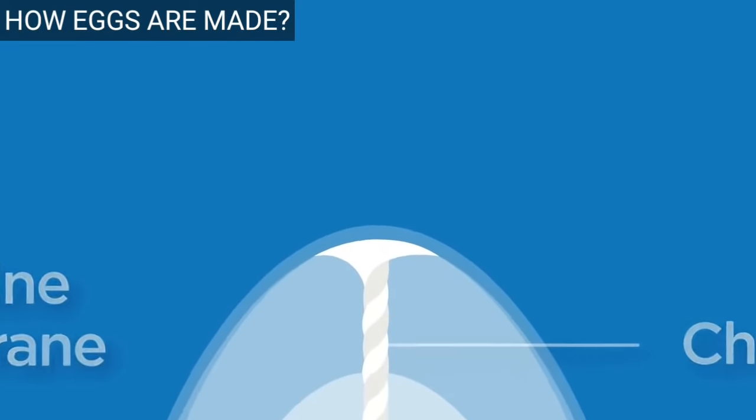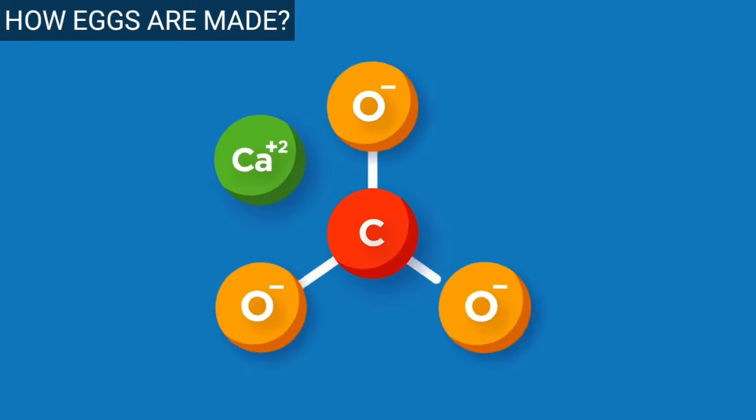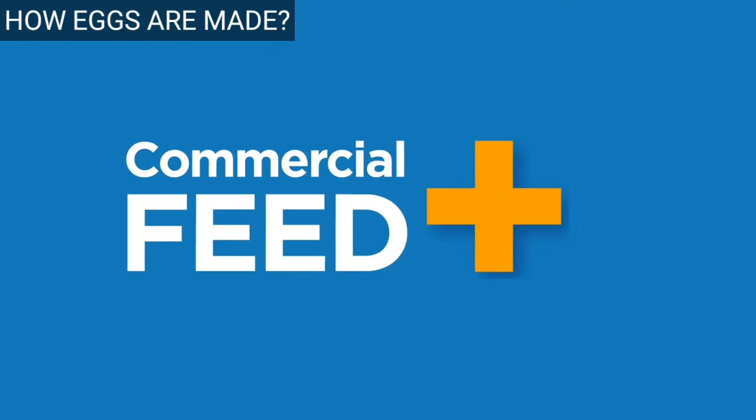The eggshell is deposited around the egg. It is made mostly of calcium carbonate. Calcium needs to be provided in adequate amounts in the hen's diet through commercial feed and supplemental calcium sources like oyster shell.